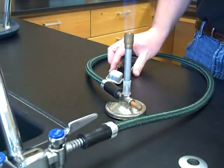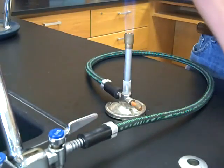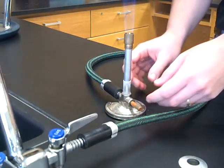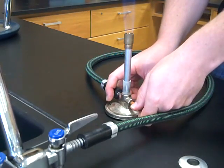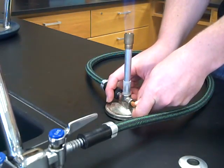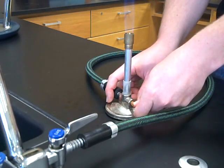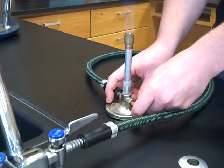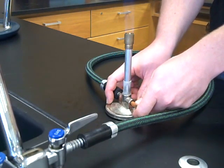Now at first, your flame might be pretty tall, taller than we really need it to be. So at that point, you close the needle valve slowly to bring the height of the flame to a couple of inches, two or three inches.